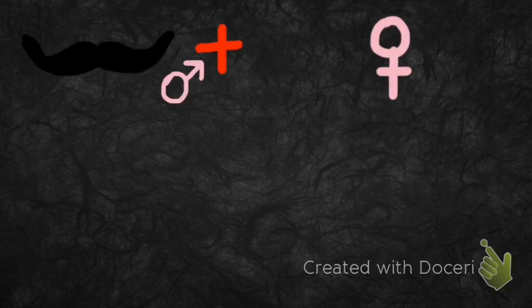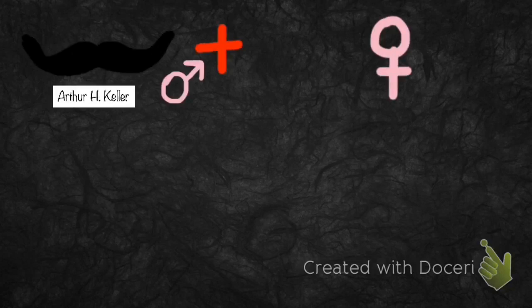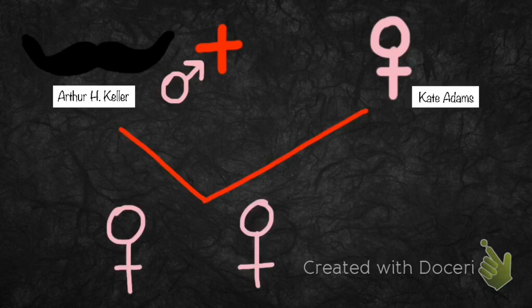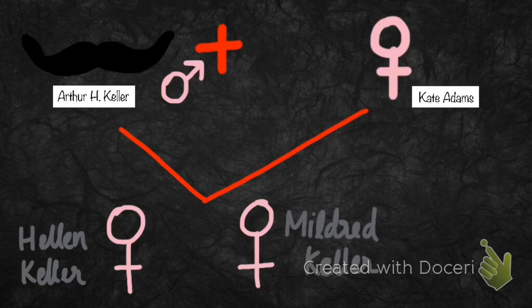Her father Arthur Keller and her mother Kate Adams had two children, Helen Keller and Mildred Keller. The story also talks about her two other half-brothers who were from Arthur Keller's first wife.